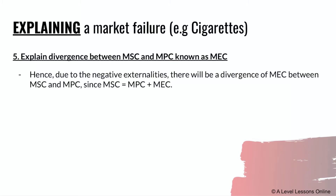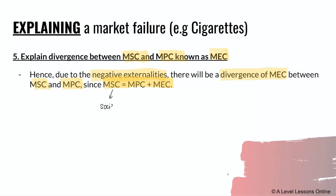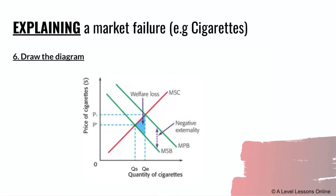After that, you want to explain the divergence between MSC and MPC, which is known as MEC. Due to the negative externalities, there will be a divergence of MEC between MSC and MPC. The formula is: MSC (marginal social cost) equals MPC plus MEC (marginal external cost). Think of it as: society's cost equals the smoker's cost plus the cost borne by third parties. When there are negative externalities, it causes this additional external cost that third parties face as a result of the person smoking.